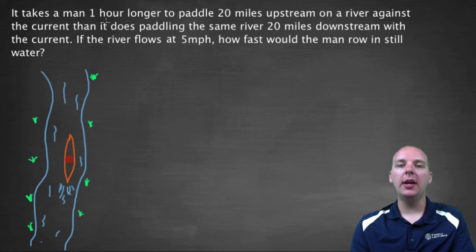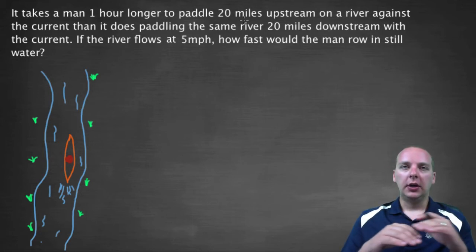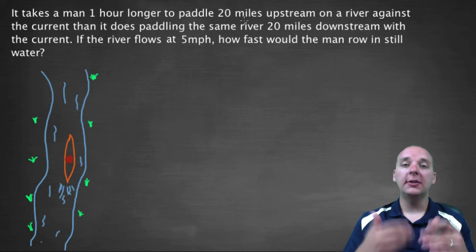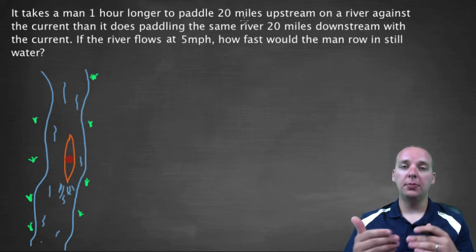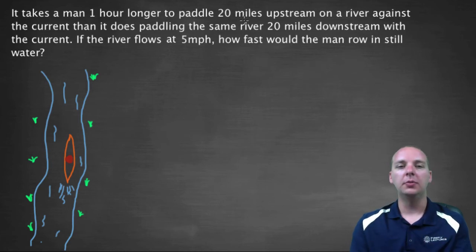I mean you can code it with any type of situation, but the underlying problem is always the same. Okay, so let's read this. It says, it takes a man one hour longer to paddle 20 miles upstream on a river against the current than it does paddling the same river 20 miles downstream with the current. That makes sense. You can go downstream a lot faster because you have kind of your regular speed plus whatever the current of the river is helping you.